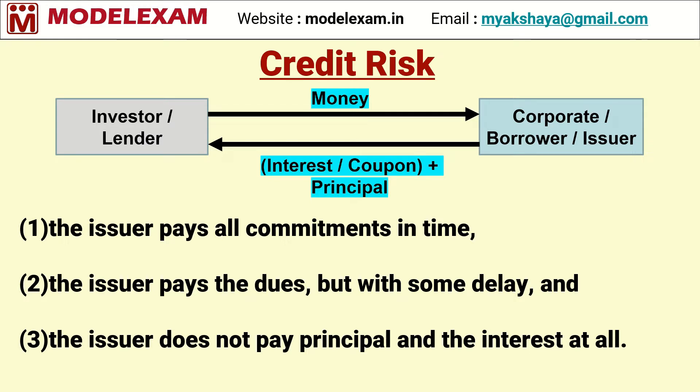The borrower can also be a government. Governments borrow money and issue two types of securities: short-term securities known as treasury bills, and long-term securities known as dated securities. There are three famous variants of treasury bills: 91-day, 182-day, and 364-day treasury bills. Government securities are generally considered risk-free because they do not carry credit risk — the government repays principal and interest promptly. However, they are subject to interest rate risk, which we will discuss later.